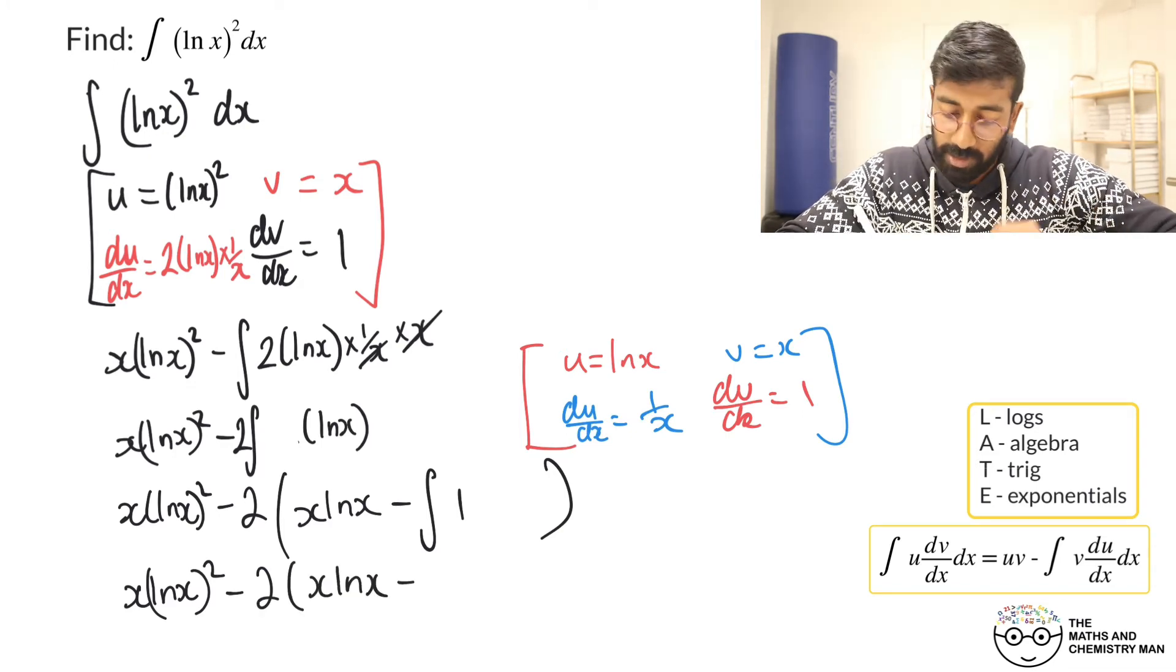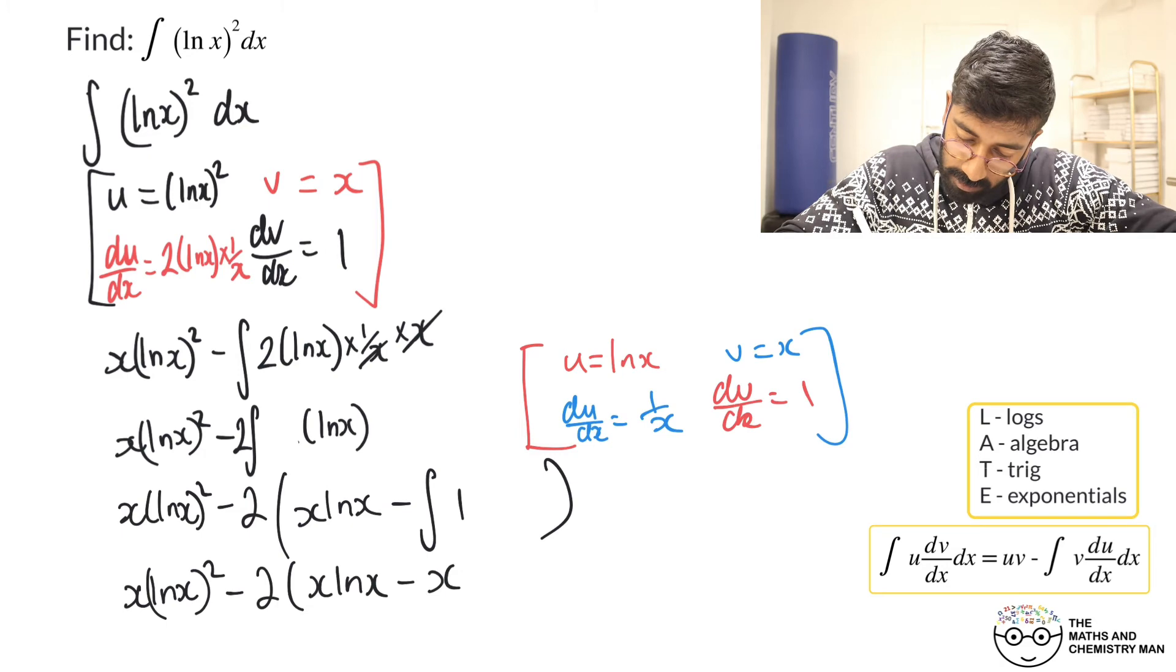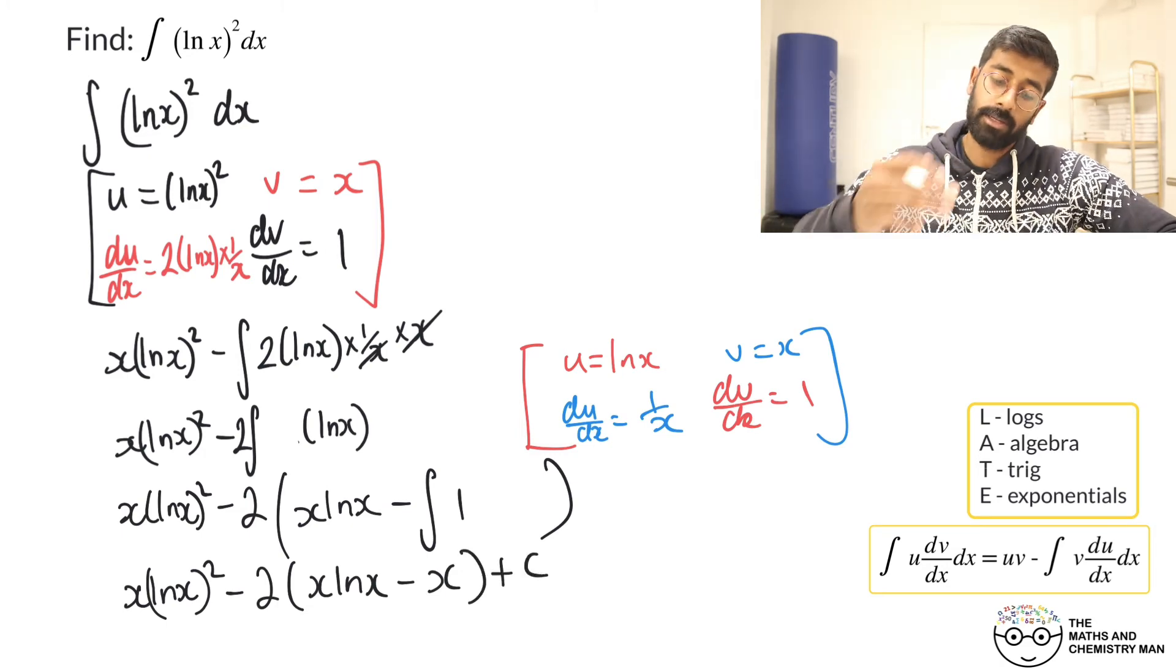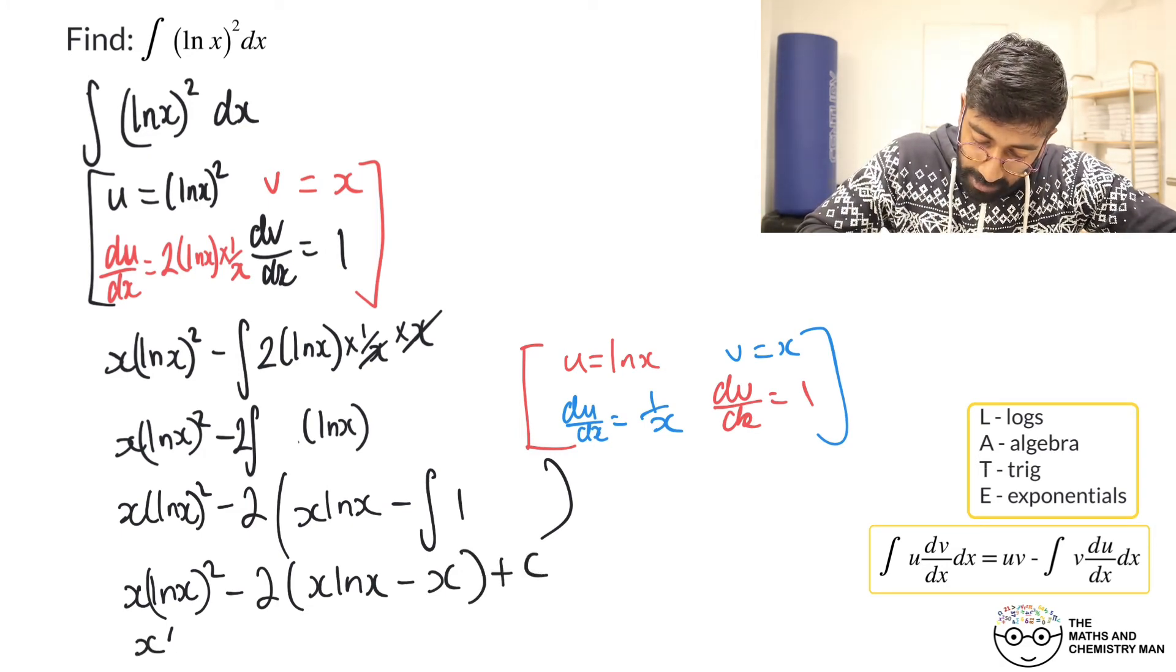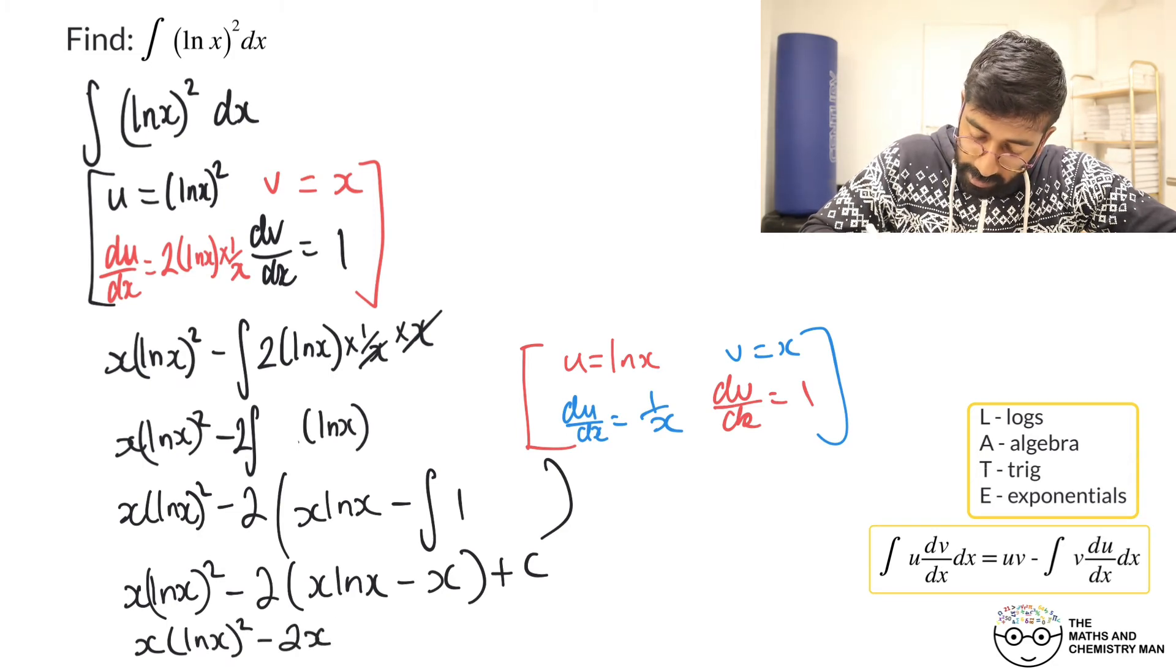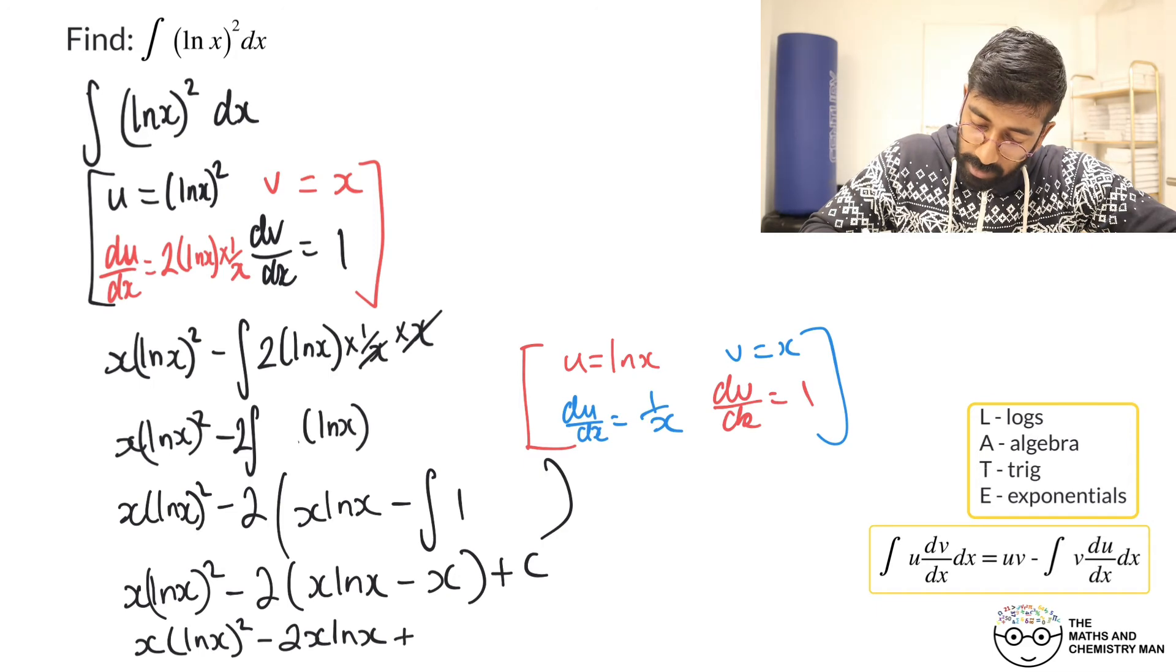So that's x ln(x) all squared subtract 2 lots of x ln(x) minus integrate the 1 that's going to give you just x and then plus c on the end. What can we do? We'll just neaten this up a little bit more.